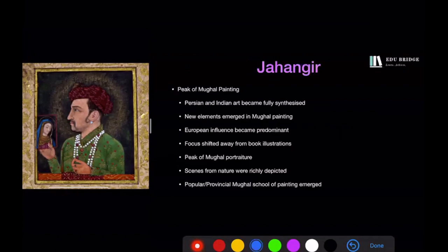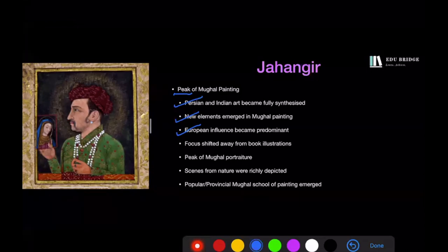Mughal painting reached its peak under Jahangir. Jahangir was himself a gifted artist and a great patron of painting. In the Tuzuke Jahangiri, his autobiography, Jahangir stated that he had the ability to identify different painters simply by looking at the brush strokes of their work. Under him, Persian and Indian art became fully synthesized, a number of new elements emerged, European influence became predominant, and the earlier focus on book illustrations shifted towards portrait paintings and scenes from nature. The popular or provincial Mughal school of painting also emerged.